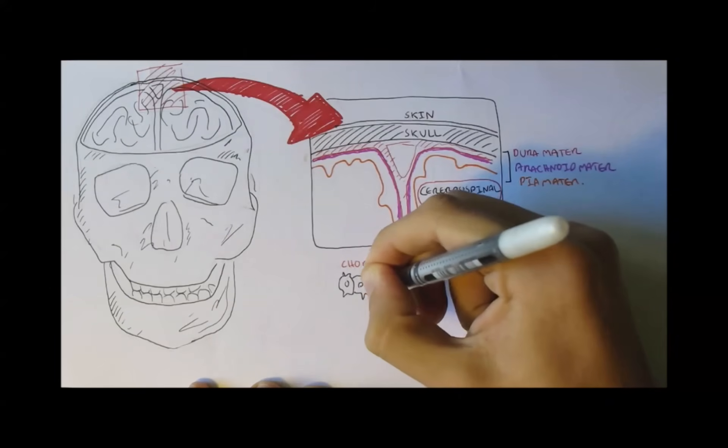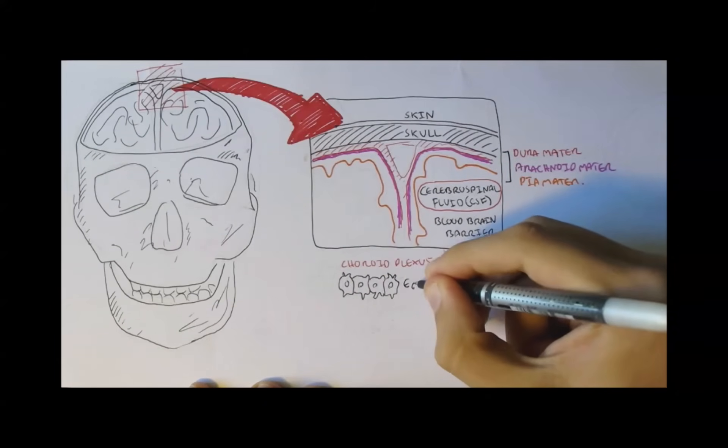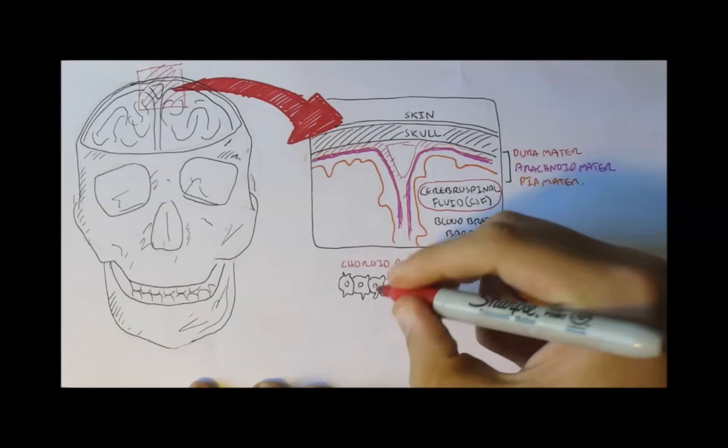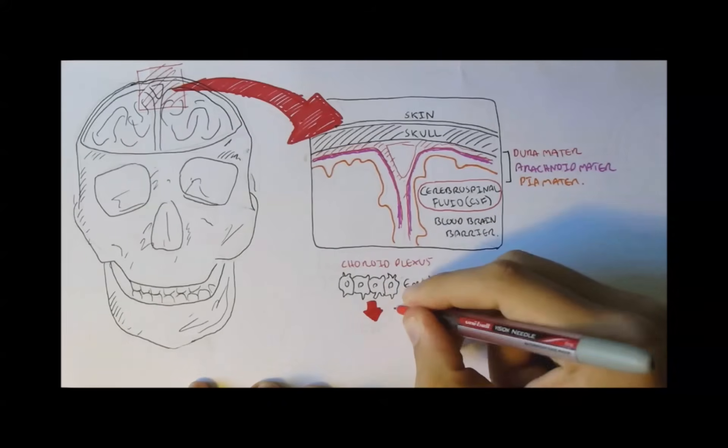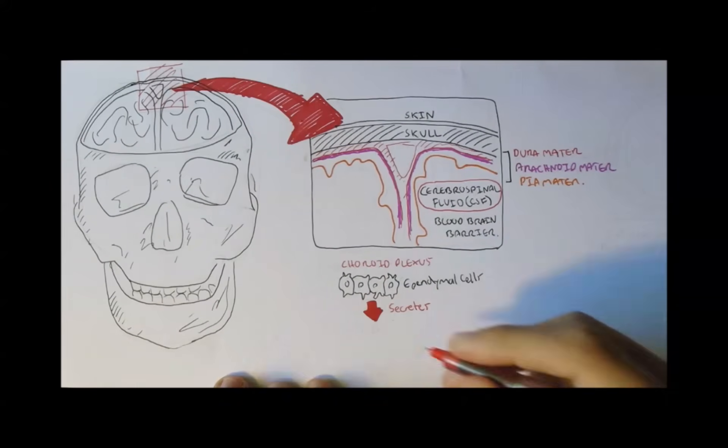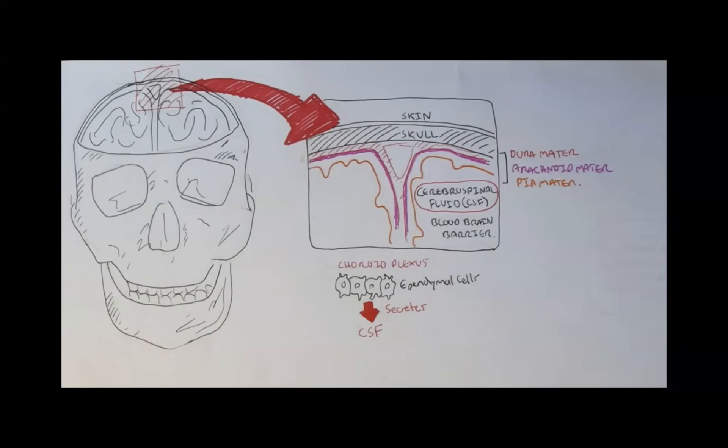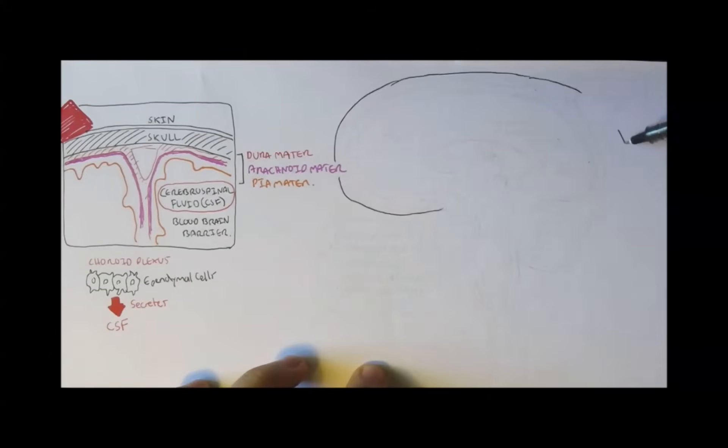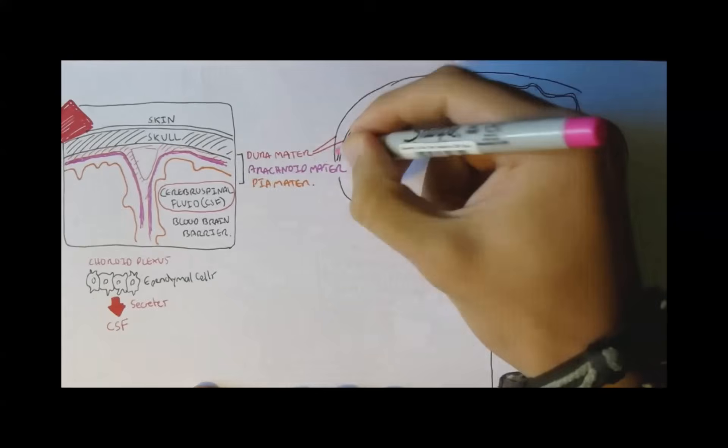Cerebrospinal fluid is secreted by ependymal cells, which are from a location called the choroid plexus. I would like to show where the choroid plexus are located in the brain, in the central nervous system, as well as show the movement of CSF in the brain.